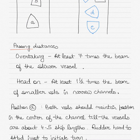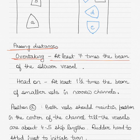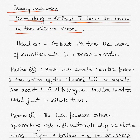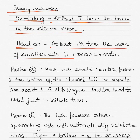In terms of passing distances: in an overtaking situation, at least 7 times the beam of the slower vessel should be maintained. In a head-on situation, at least 1.5 times the beam of the smaller vessel should be maintained in narrow channels.